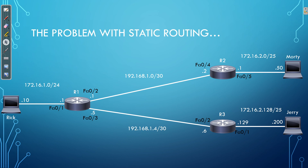Before we look at dynamic routing protocols, we need to understand why we need them. The easiest way to see this is to contrast dynamic routing protocols with static routing. Over the previous two videos, we covered static routing and how to configure it. One of the main issues with static routing is that it requires us to go to every single device and configure it, telling it all the networks that it can reach which are not directly connected.